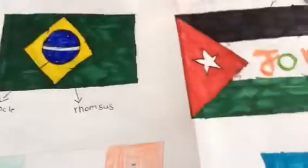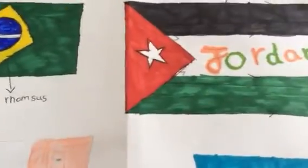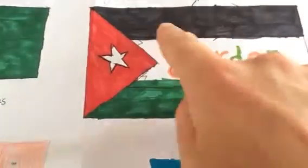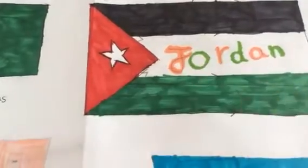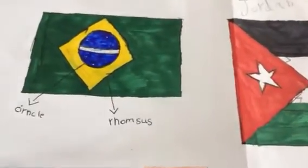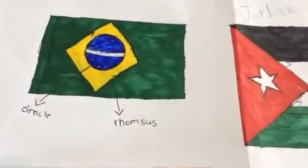And last, a couple of flags we might have seen before. There we go. The Jordan flag, trapeziums, triangles, rectangles, parallel lines, and another flag there with a circle and a rhombus.